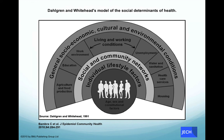Another interesting model to conceptualise social determinants of health is by Dahlgren and Whitehead. They look at it in an umbrella fashion where at the outermost ring you have the socio-economic, cultural, and environmental macro situation, which in turn affects housing, healthcare services, employment, water and sanitation, education, and availability of food. Under this you also have social and community networks, and then individual lifestyle factors — all of which affect your health outcomes depending on which group you belong to.